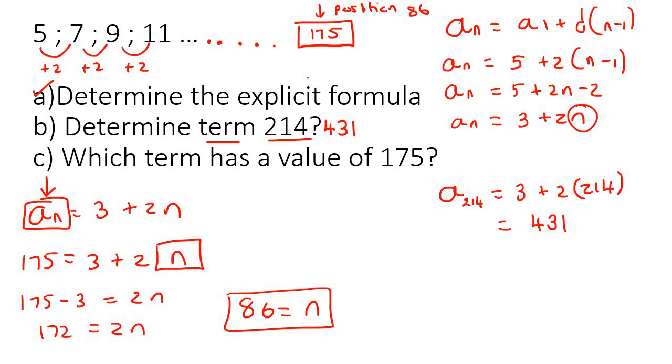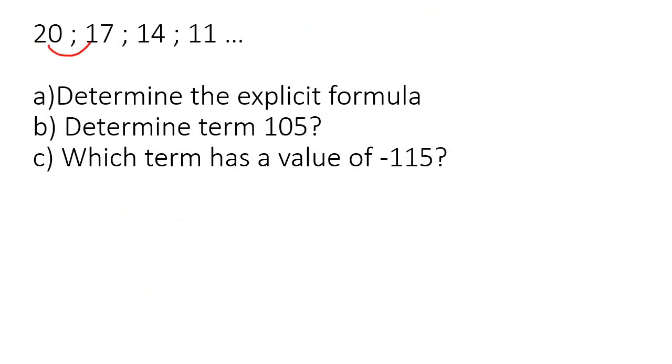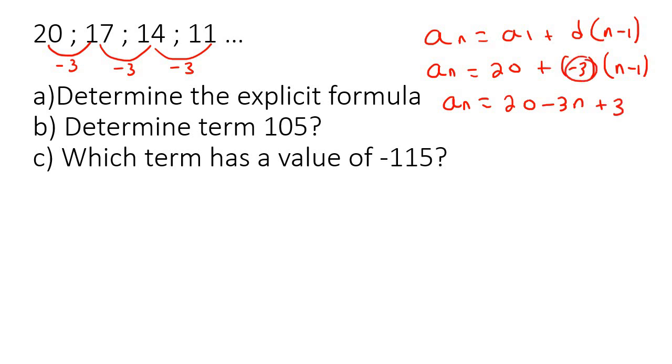Let's do another example. So here we can see it's arithmetic because we are subtracting 3 each time. So we know it's arithmetic. So the basic formula is an equals to a1 plus d bracket n minus 1. And so we know that a1 represents term 1, which is 20. d is going to be negative 3, and then n minus 1. Now we can just go simplify to become 20 minus 3n plus 3. Because this negative 3 multiplied in, and then multiplied in there. And so if you had to simplify this, it would be 23 take away 3n. And so that's our formula for question A.